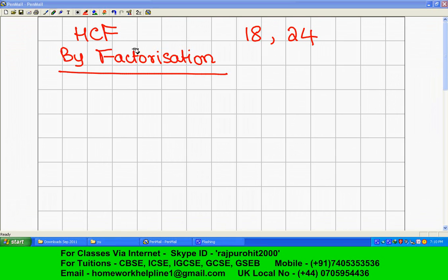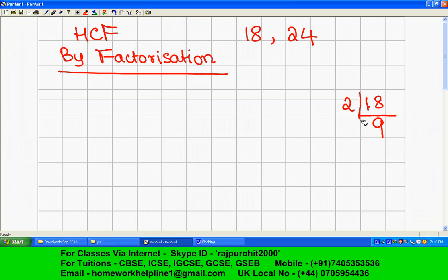We are finding HCF by factorization. The numbers given are 18 and 24. So we will factorize 18. We will write the factors of 18. I will start with 2. Two nines are 18. Nine is not divisible by 2.